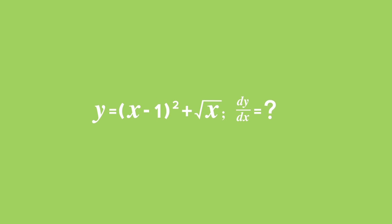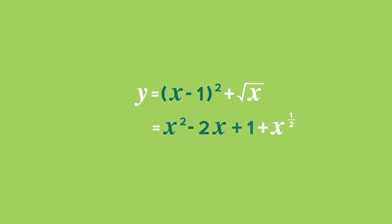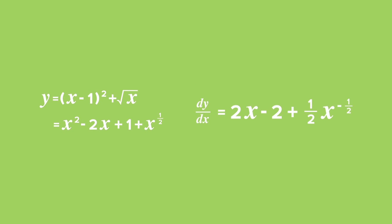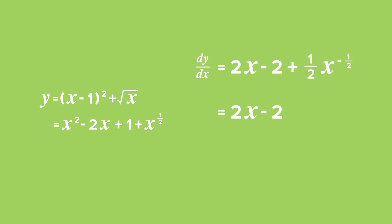Example 5: Finding the derivative involving roots. If y equals the quantity x minus 1 all squared plus the square root of x, find dy by dx. Solution: Simplify and rewrite — x minus 1 all squared gives x squared minus 2x plus 1, and the square root of x is x to the power of a half. Now differentiate: dy by dx equals 2x minus 2 plus one half x to the power of negative one half, which can be written as 2x minus 2 plus 1 over 2 times the square root of x.